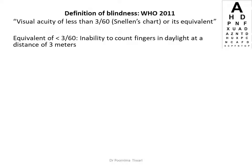In 2011, the definition of blindness was less than 3/60 vision using Snellen's chart or its equivalent, which was constructed as inability to count fingers in daylight at a distance of 3 meters.